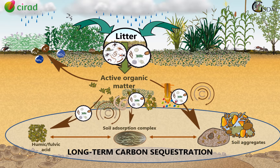High biomass inputs associated with various ways of organic matter stabilization will lead to long-term carbon sequestration in DMC systems. The increase in stable soil organic carbon over time under DMC systems plays a fundamental role in the replenishment of soil fertility and acquisition of ecosystem resiliency. The cultivated ecosystem functions similarly to a natural forest ecosystem.